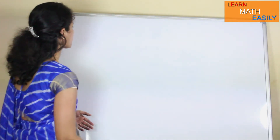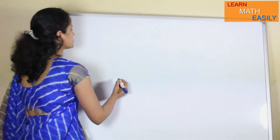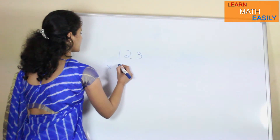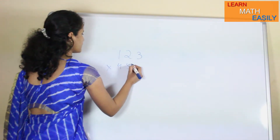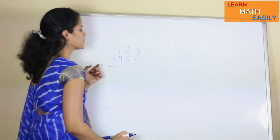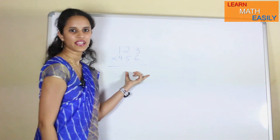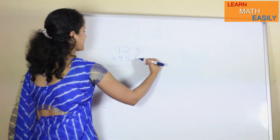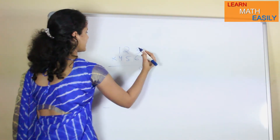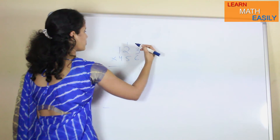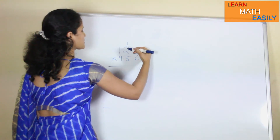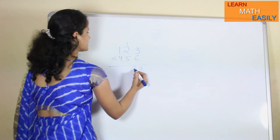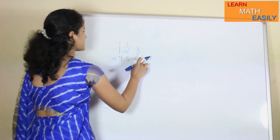Now, if you will solve any number, say for example 123 multiplied by 456. Using the usual method, you are multiplying 6 by 3, which gives 18, carry over 1. Then 6 multiplied by 2 gives 12, plus carry 1 gives 13, carry over 1.